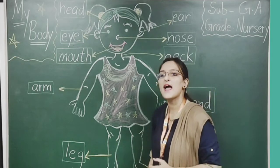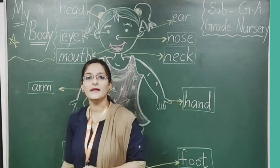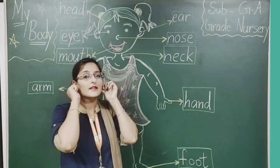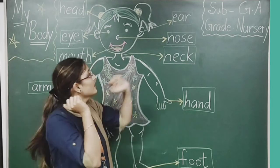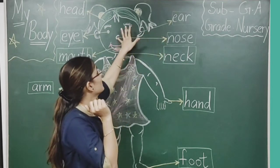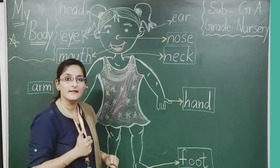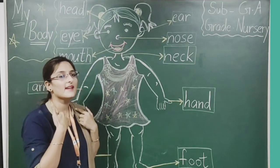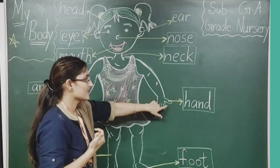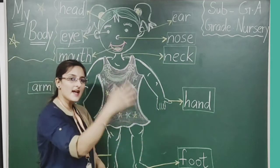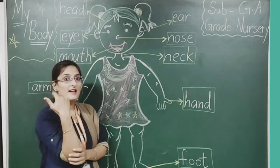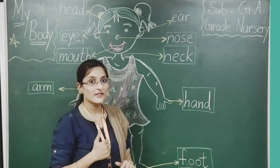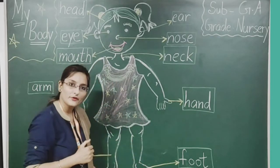Next is neck — our throat. Next is leg — our pair. Next is ear — our kaan. Next is nose — our naam. Next is neck — our gala. Next is hand. You can see here — hand. Be careful also. Arm. Fingers. Got it? Last is foot.